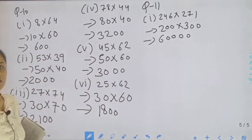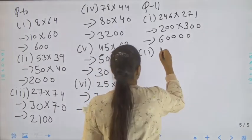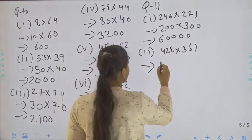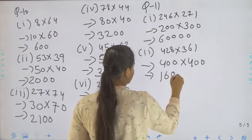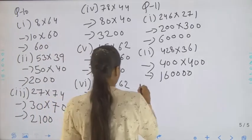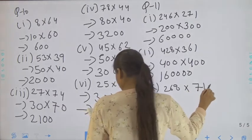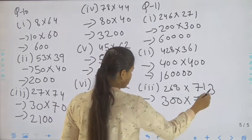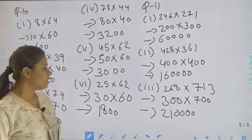Now move to the second part: 428 into 361. 428 will round off to 400 and 361 will round off to 400. 4 fours are 16 and four zeros — it will be 1,60,000. Now move to the third part: 268 into 713. 268 rounds to 300 and 713 rounds to 700 because the tens digit is 1. 7 threes are 21 and four zeros — it will be 2,10,000.